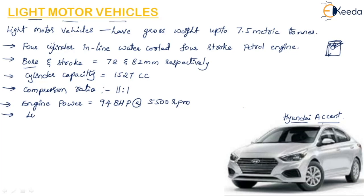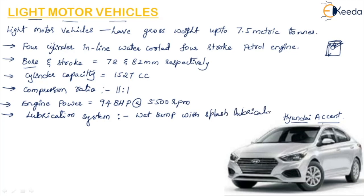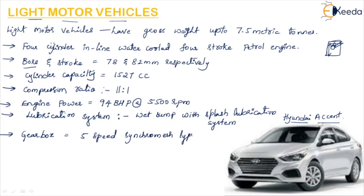The lubrication system used is a wet sump with splash lubrication. The gearbox is a 5-speed synchromesh type manual gearbox — when we study the details of gearboxes we will know what the different types are. The wheelbase of this car is approximately 2.5 meters.